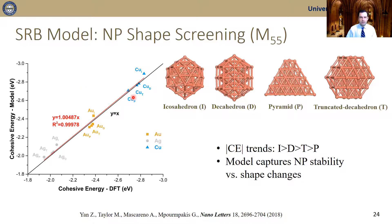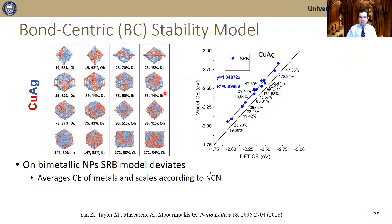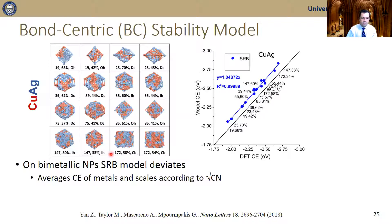The square root bond-cutting model can also differentiate between different shapes at a specific size. For example, it captures that icosahedral symmetry is more stable than the rest of the symmetries for 55-metal-atom nanoparticles. However, when tested on bimetallic nanoparticles — here the case of copper-silver — and we changed composition in a random fashion, the model deviates from DFT calculations. This was motivation for us to develop a new model.